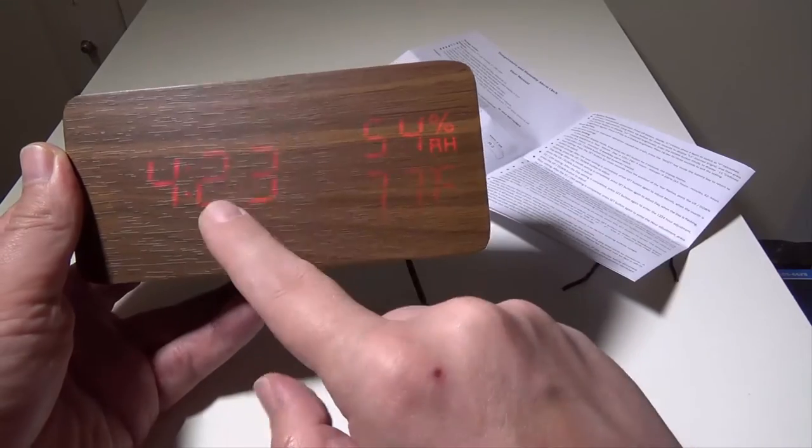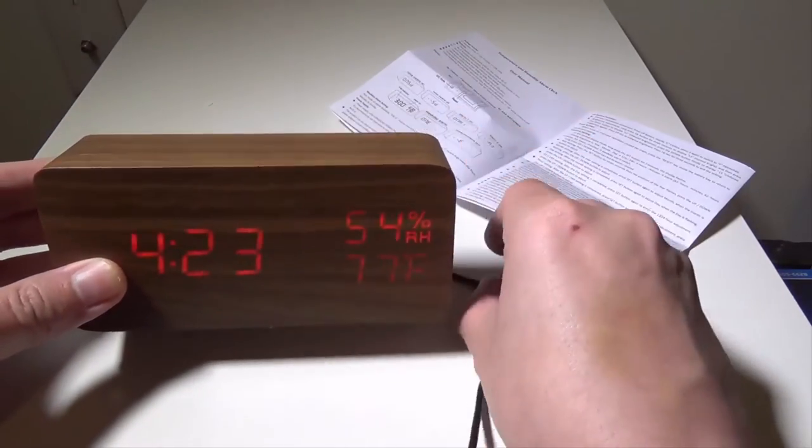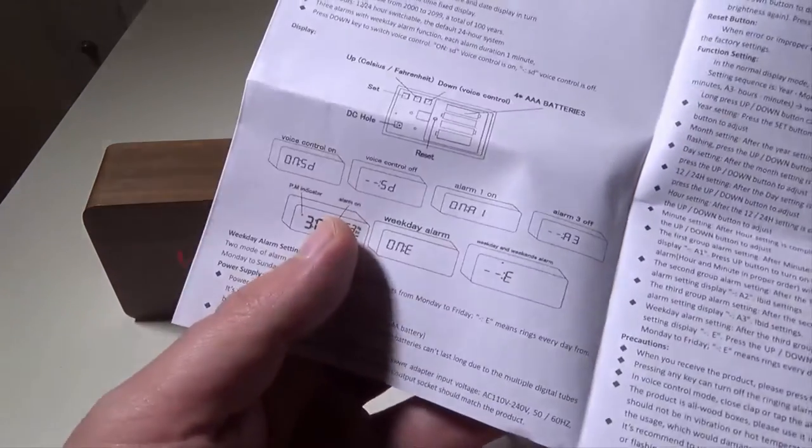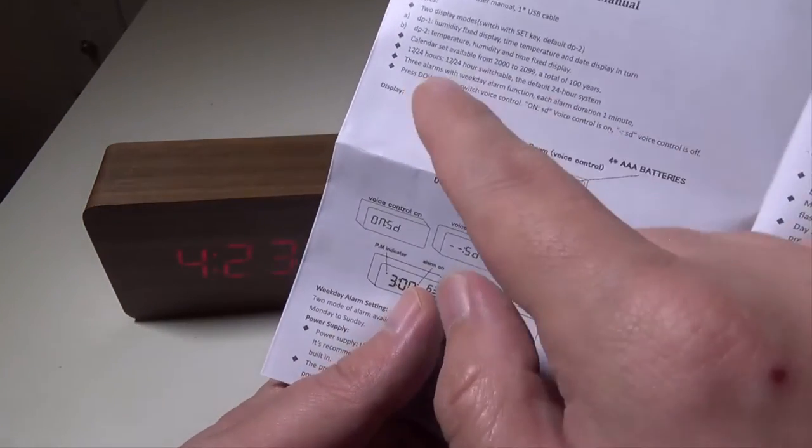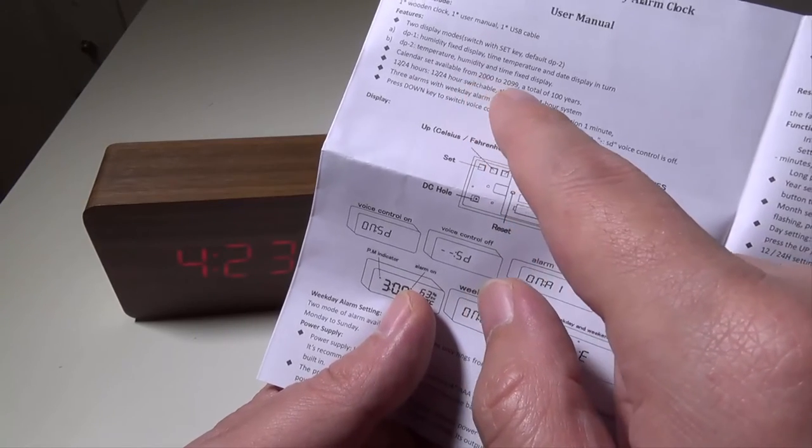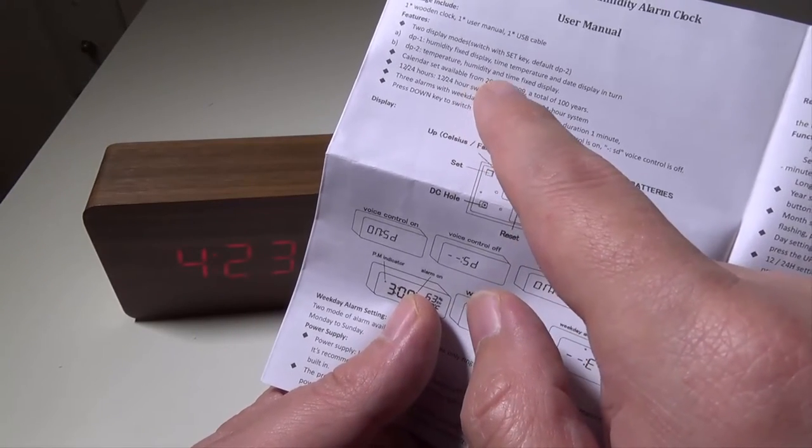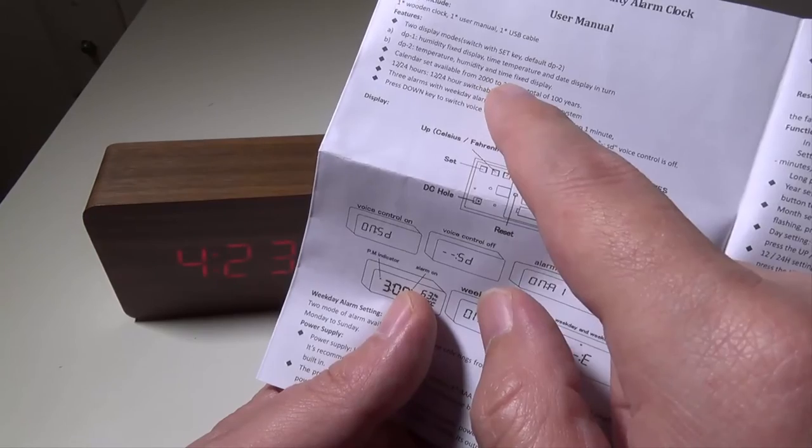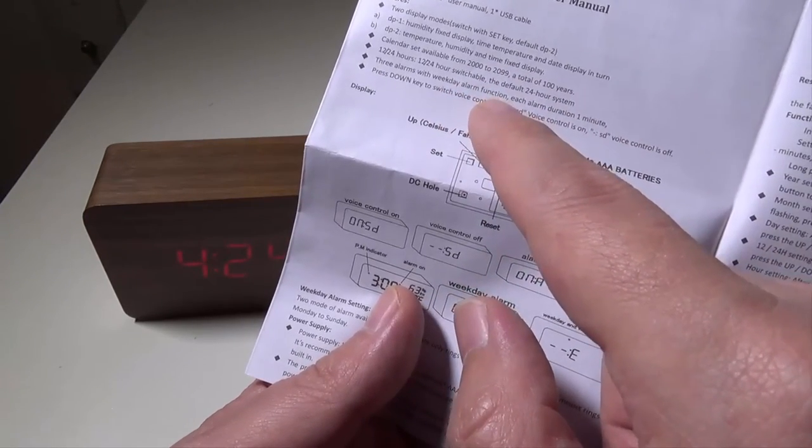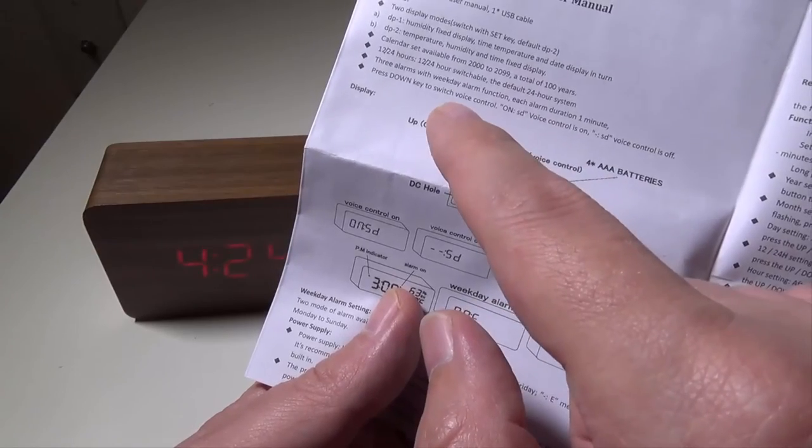You can easily set all of these. If you want 12 or 24 hour, you can do that. You can obviously set your calendar date from anywhere from the year 2000 to 2099. You have three alarms with a weekday alarm function on this.